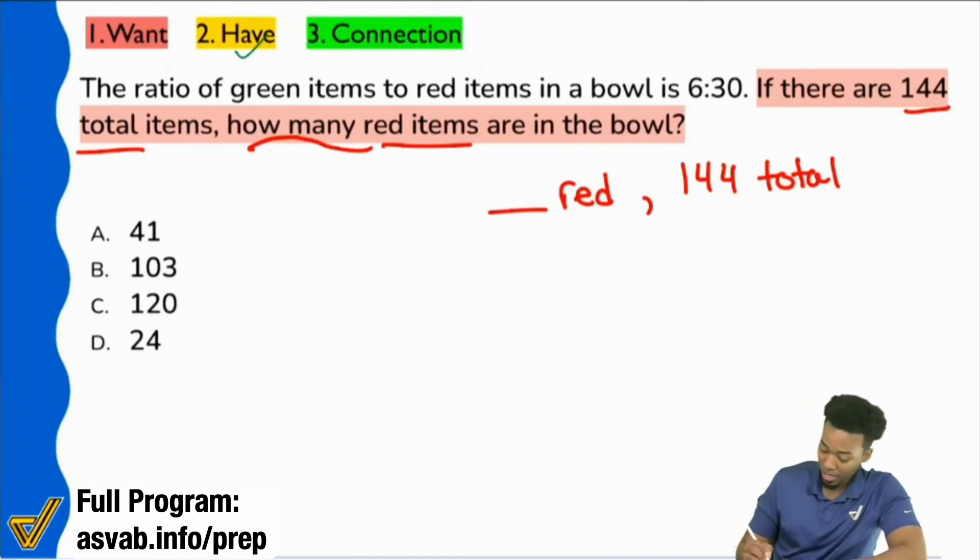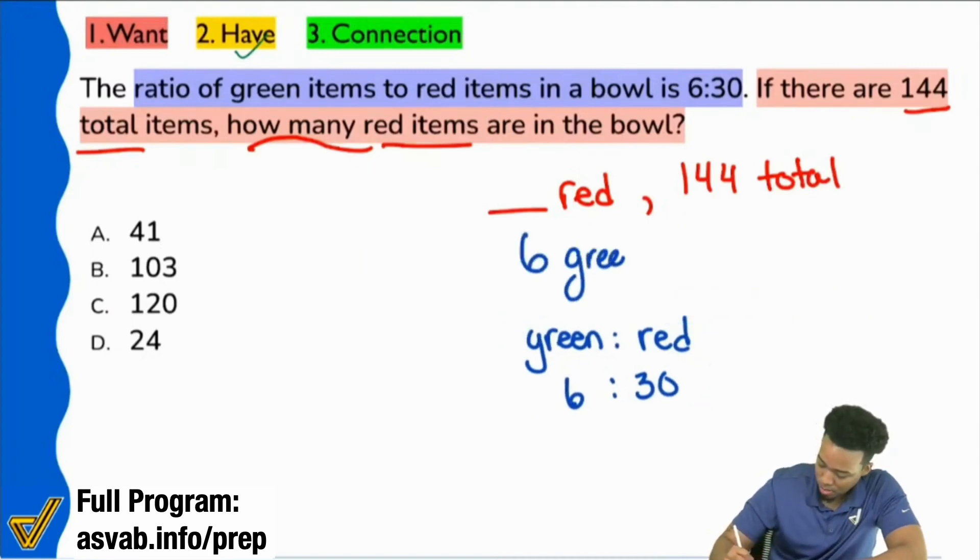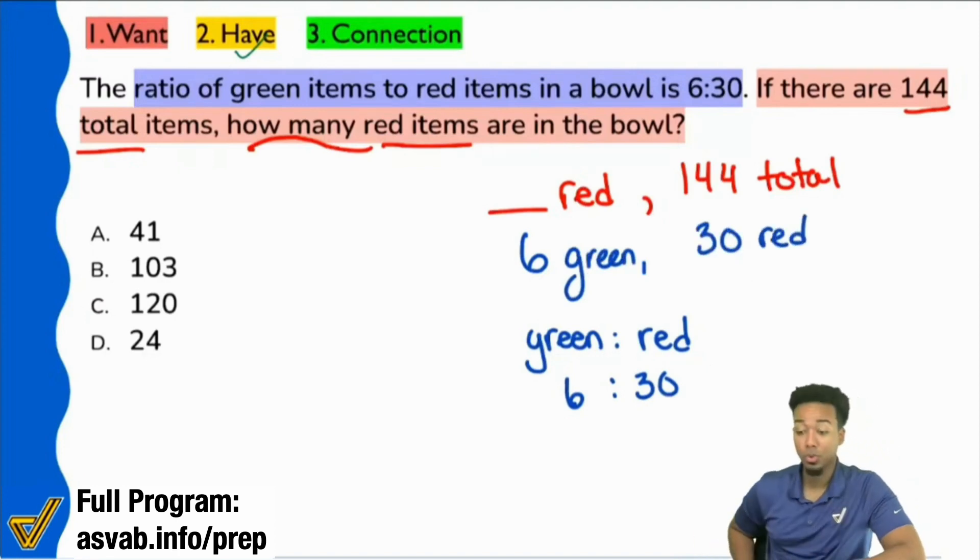It says the ratio of green items to red items in a bowl is 6 to 30. So it's saying here in this part, ratio of green to red, 6 to 30, the order matters. So they're saying green to red, that is 6 to 30. So another way that you can write that, if you want to write it in the same way as above, it would be 6 green and then 30 red. That's how you would read it.